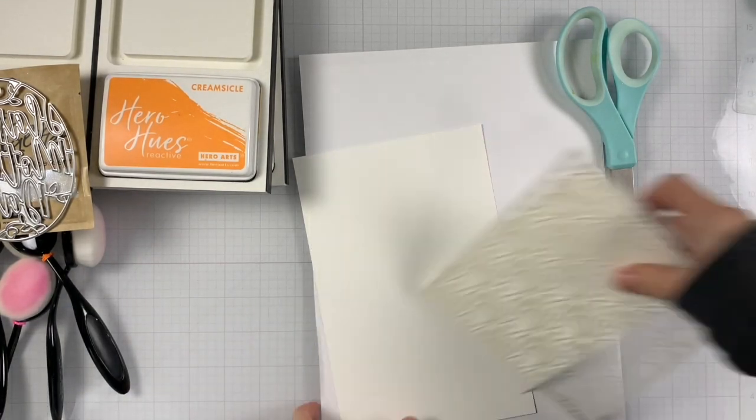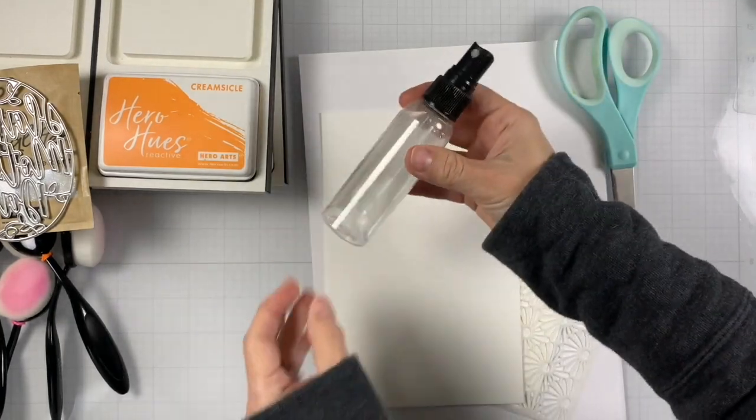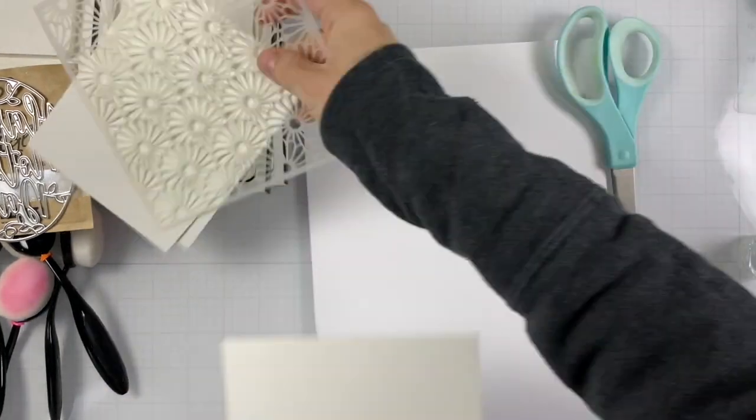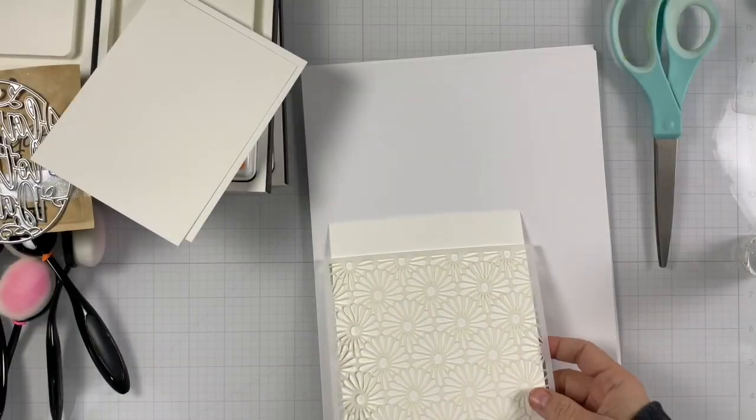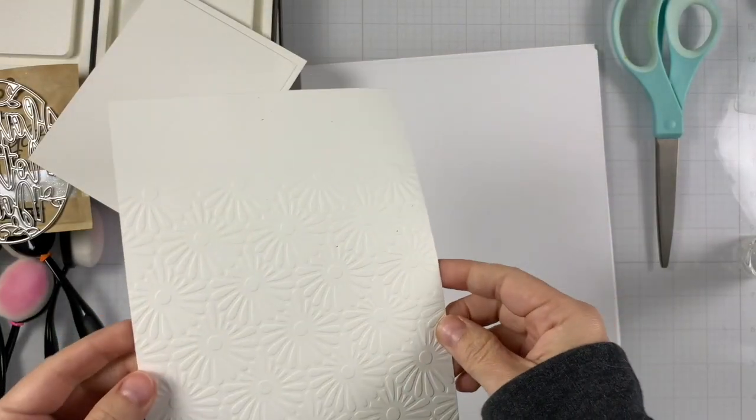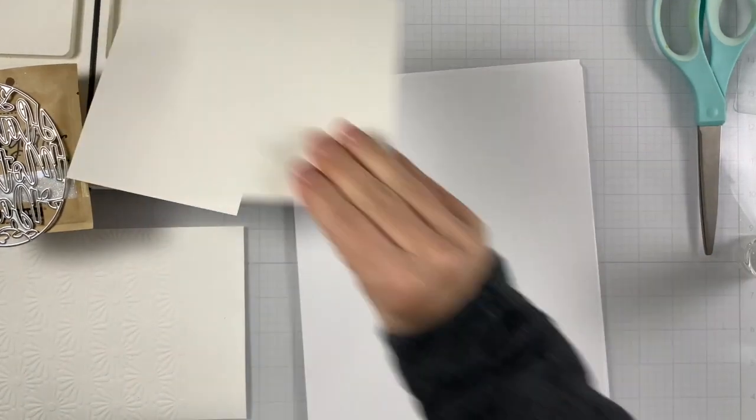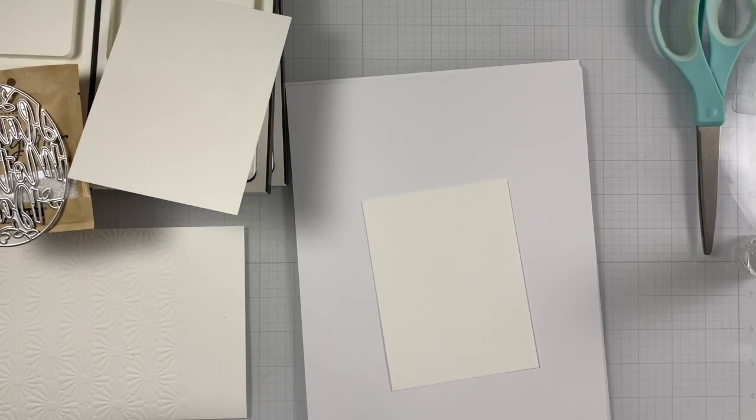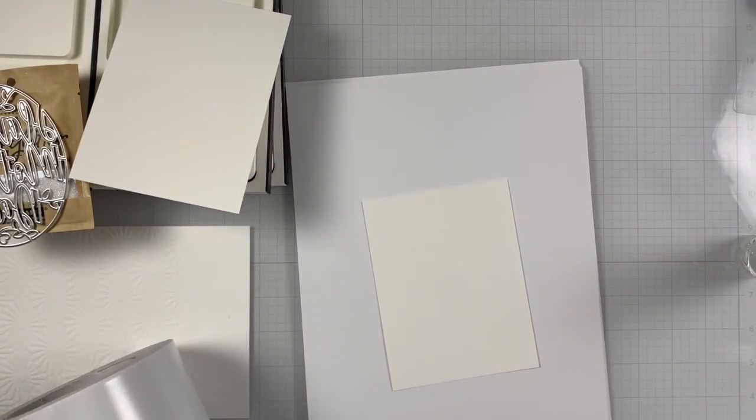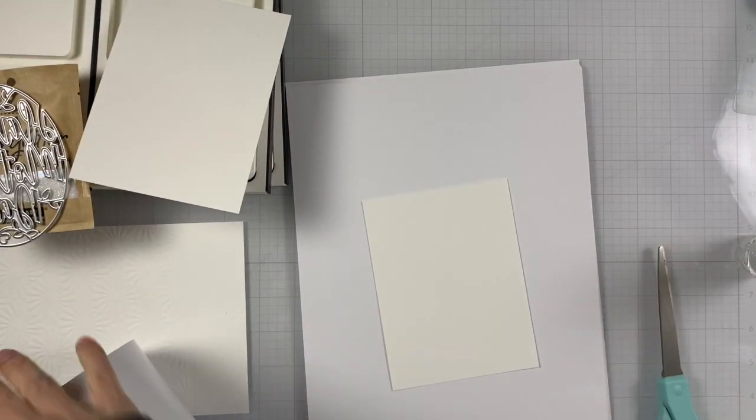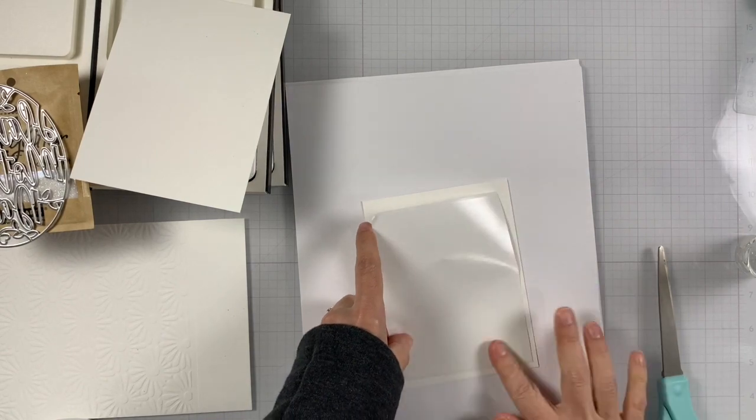Before I run it through my die-cutting machine, I will spray that background with water. That helps for the impression to show up much better. So after I sprayed it with water, I run it through my die-cutting machine, and it's all done. I'm setting it aside to dry while we work on our die-cut.